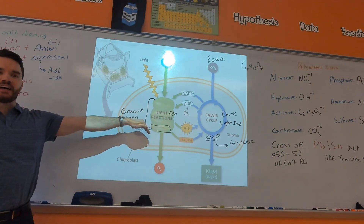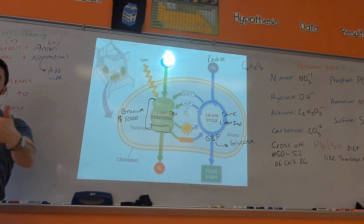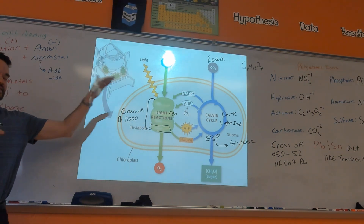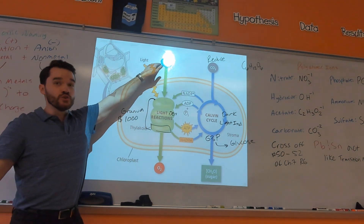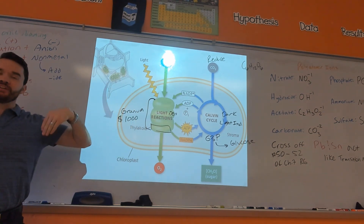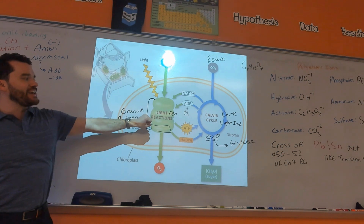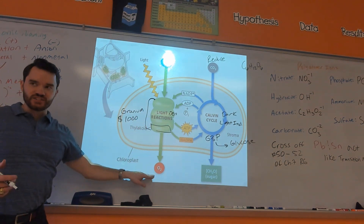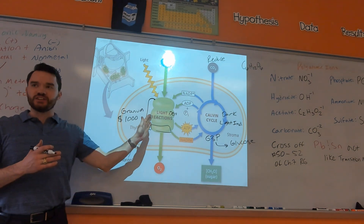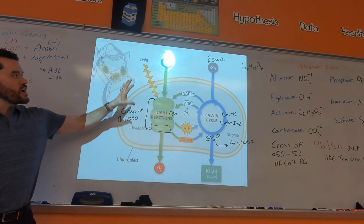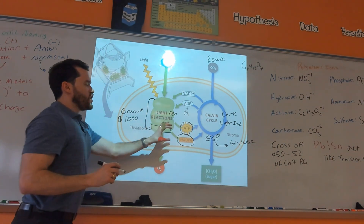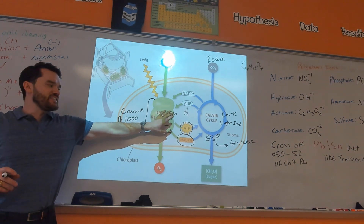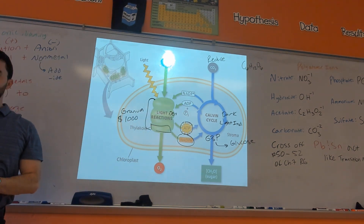We use the energy of sunlight in the light reactions. In cellular respiration, we produced water at the end of the electron transport chain; in photosynthesis, water is a reactant — it's an input. We use water and light, and we get out oxygen, whereas in cellular respiration you put in oxygen. We use the energy of sunlight to make ATP and NADPH, and then we use the energy stored in those molecules to create G3P — glyceraldehyde-3-phosphate.